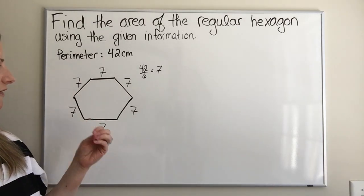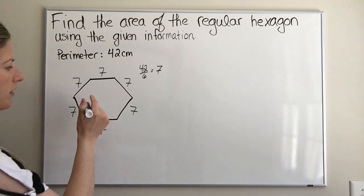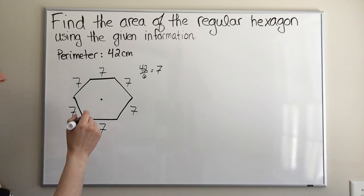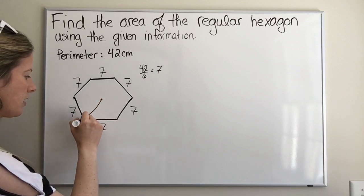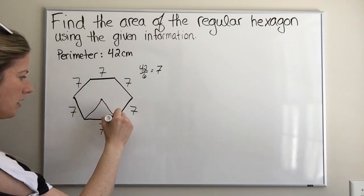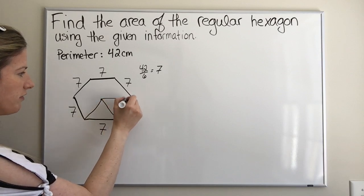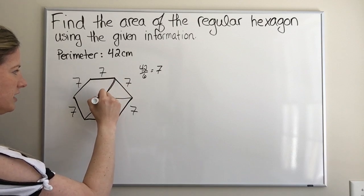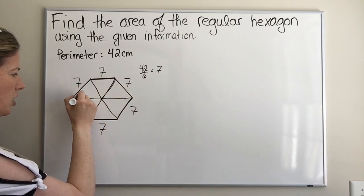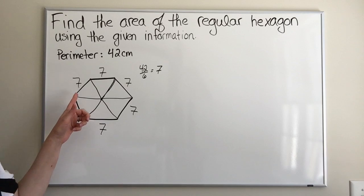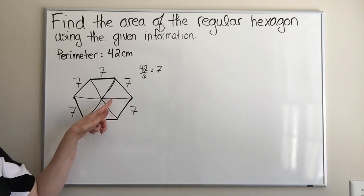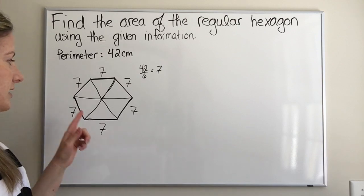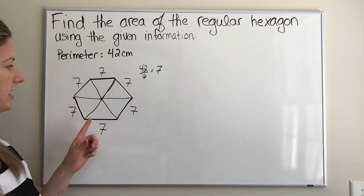How we're going to think about finding the area is this: if we go to the center of the regular hexagon and draw lines from the center to each vertex, we will create six congruent triangles.